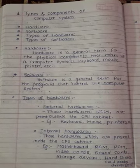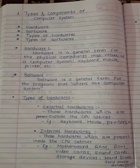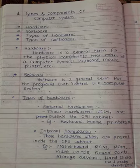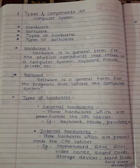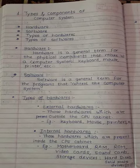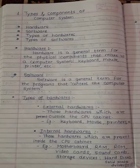To understand software and hardware, we can take the example of real life, where we compare computers with books. The actual pages and ink used on the pages of the book are equivalent to the hardware used to make the computers. The words written on the pages are equivalent to the software. Without the words, the book is useless. Similarly, without the software, computers would be of little use.